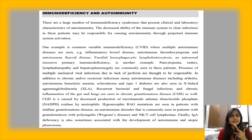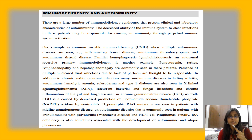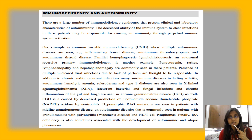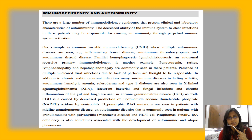One related example is CVID — Common Variable Immunodeficiency — where multiple autoimmune diseases are seen. This is a very potent MCQ topic. Conditions that develop in CVID include inflammatory bowel disease, autoimmune thrombocytopenia, and autoimmune thyroid disease. Other examples include XLA and chronic granulomatous disease.